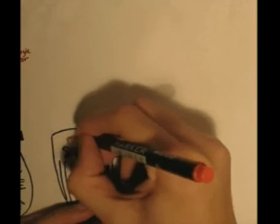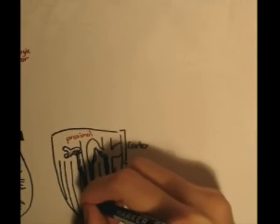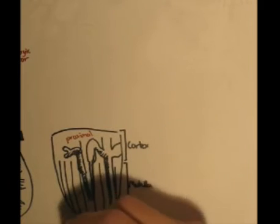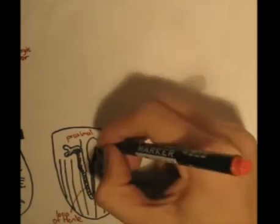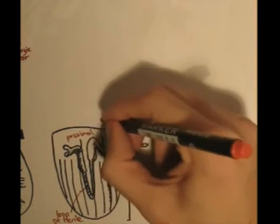We'll review the anatomy of the nephron just briefly. After the Bowman's capsule we have the proximal convoluted tubules, followed by the loop of Henle, and then we have the distal convoluted tubules.